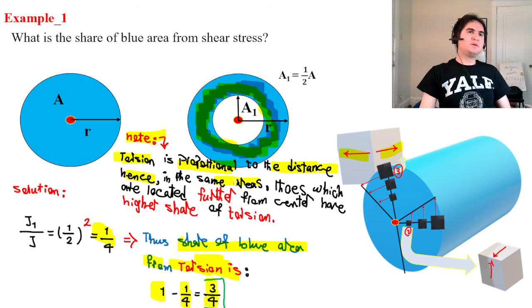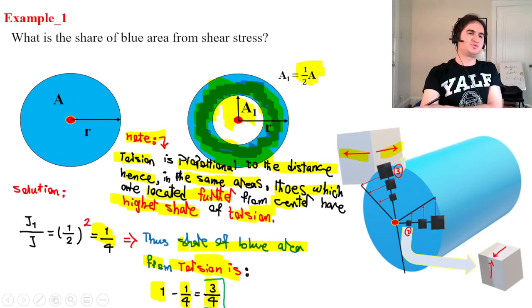The same areas, having the same area A1 was a half of area. So this is the half of area, and the rest of blue area is the other half. Having the same areas, those which locate farther to the center have higher shear from torsion. That's how you can see the rest of the half of the area outer layer goes by 3 quarter of shear due to torsion.